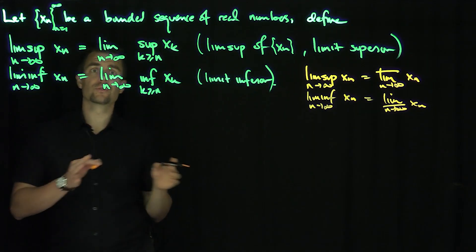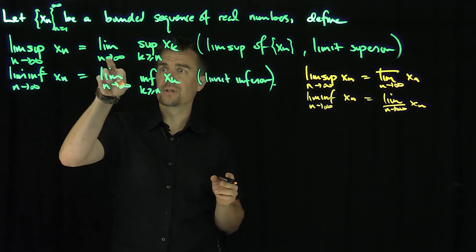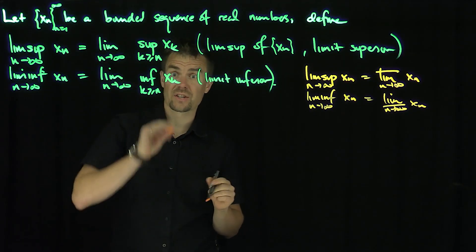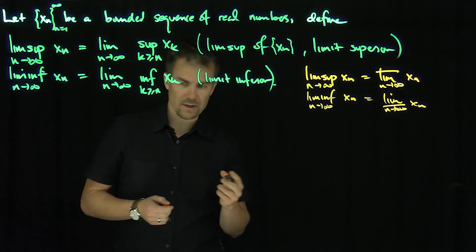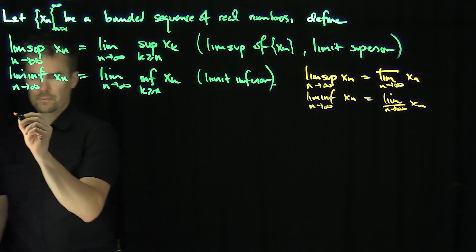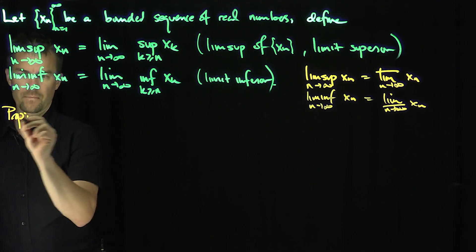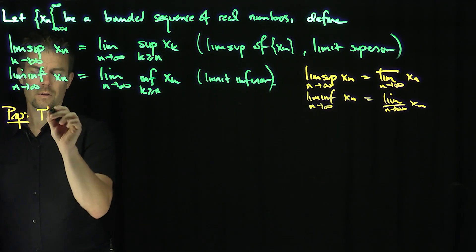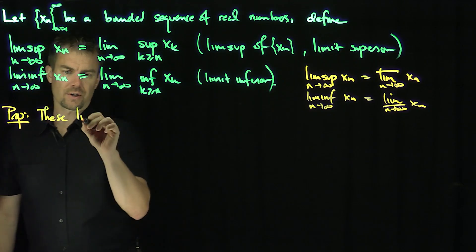The first thing I need to show is that these limits actually exist. So let's prove these things exist. Proposition: these limits actually exist.